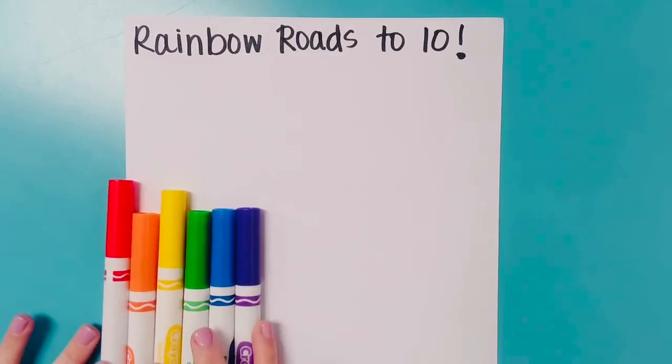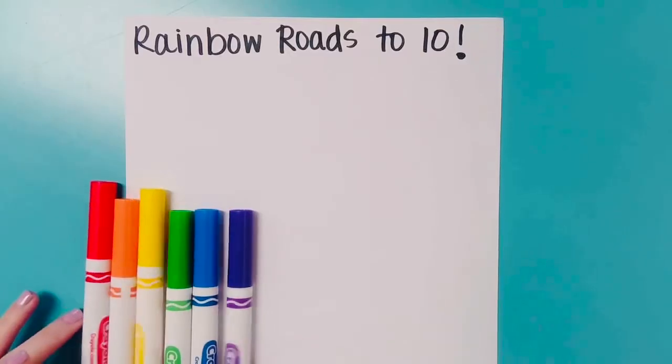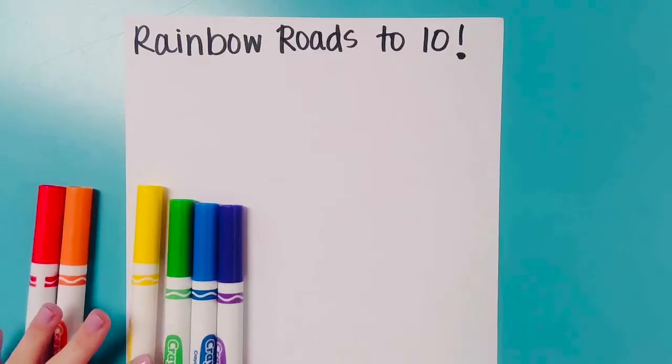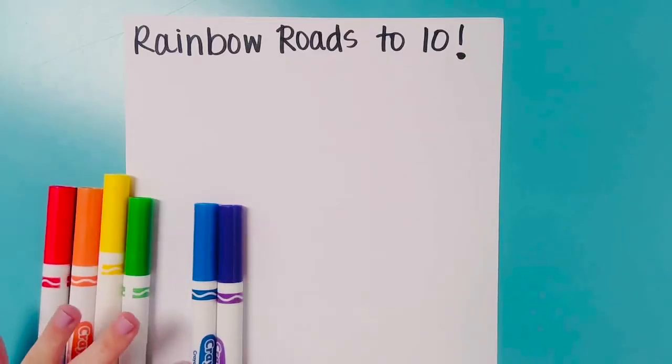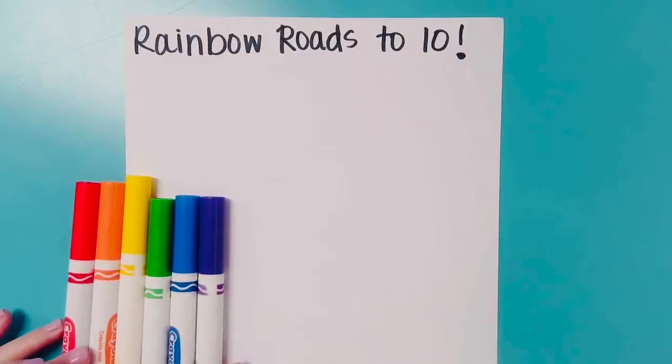All you need is a blank piece of paper and colors, markers, crayons, whatever you can find for the colors of the rainbow: red, orange, yellow, green, blue, purple. And if you don't have all of these colors, then you can find something close to it.